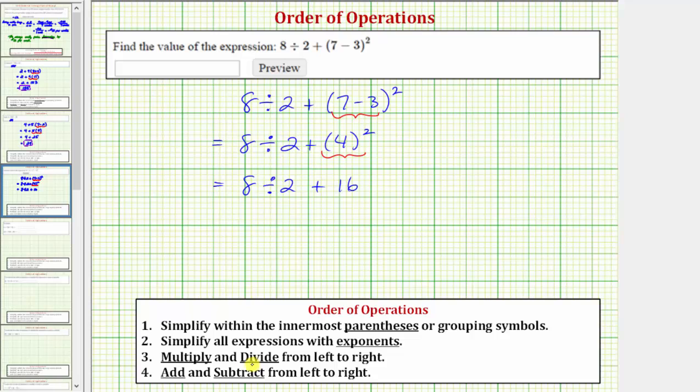Step 3, we multiply and divide from left to right. Notice how step 4 is to add and subtract from left to right. So when simplifying an expression we will always multiply and divide from left to right before adding and subtracting from left to right. So our next step is to find this quotient here. Because 8 divided by 2 is equal to 4, the expression simplifies to 4 plus 16.